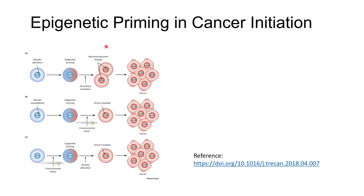Now we will discuss epigenetic priming — what it is and how it is involved in cancer initiation. Two different ways have been proposed. Looking at Panel A first: there is a genetic alteration that occurs in the genetic material, most commonly DNA, and that leads to epigenetic priming. Epigenetic priming refers to variation in gene expression compared to the wild type.